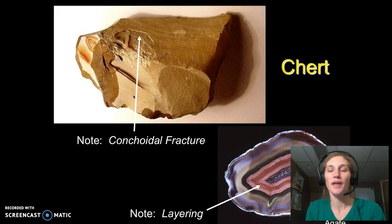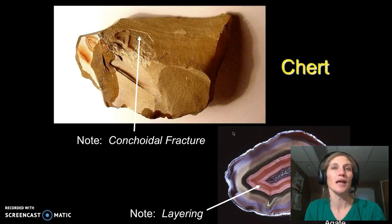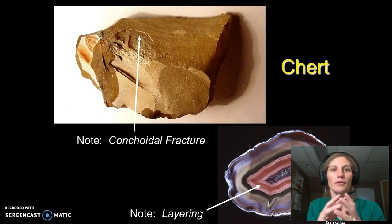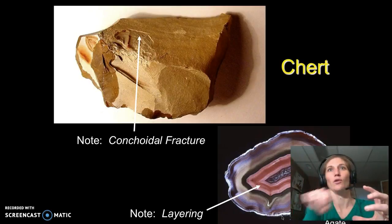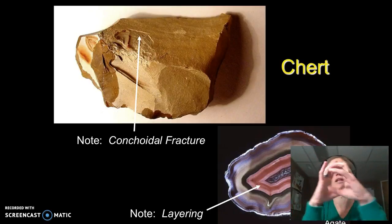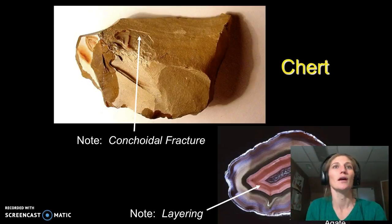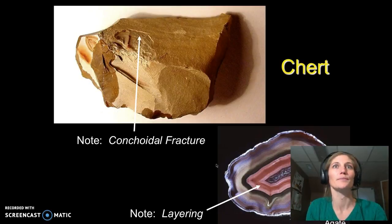Chert is another type of chemical sedimentary rock — definitely chemical, not biochemical. It forms when groundwater enriched in silicon and oxygen moves through a rock, comes into an opening, and starts to precipitate microcrystalline quartz. It grows in concentric layers until it fills the cavity, creating chert, which can be many different colors. You'll notice it does have conchoidal fracture and is very hard, just like quartz.